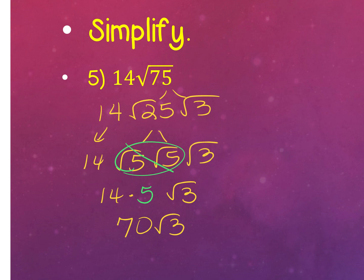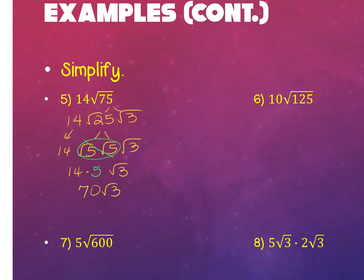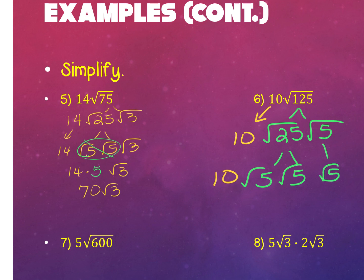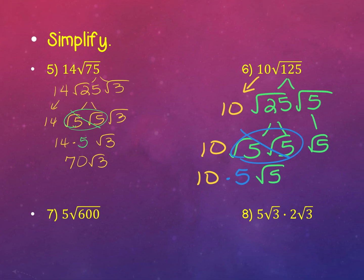For number 6, break down 125. The 10 is already outside. 125 is 25 times 5. Break 25 into 5 times 5. Bring this 5 down — the 10 is already out. Look for a pair: there's a pair of 5s, so the 5 comes out and gets multiplied to the 10. The 5 that didn't pair up stays underneath. Final answer: 10 times 5 is 50, square root of 5.